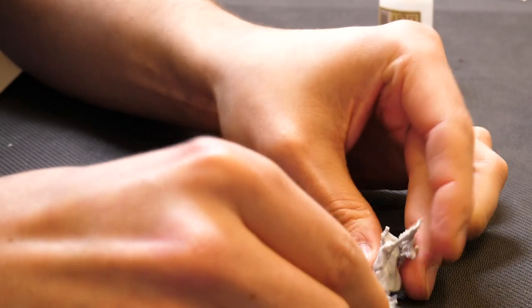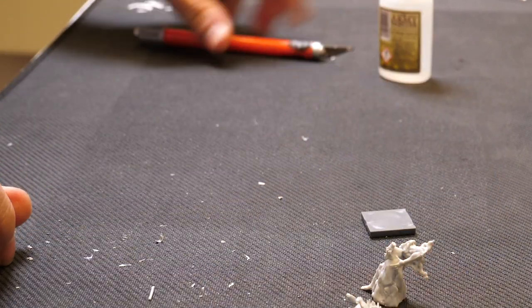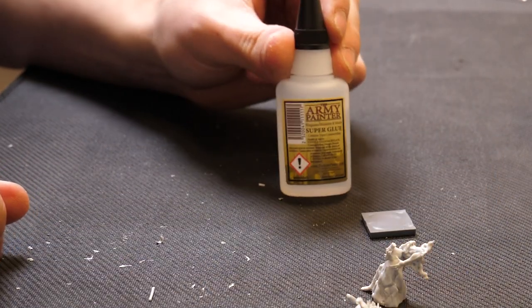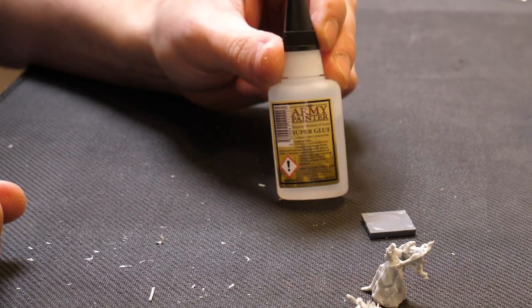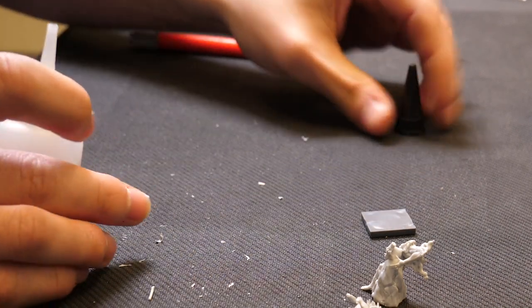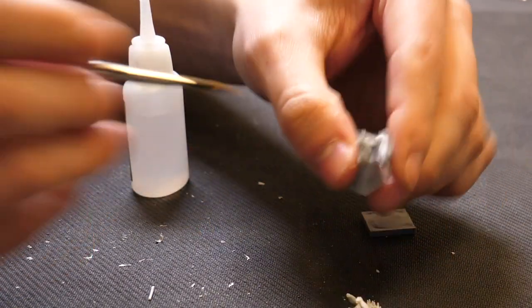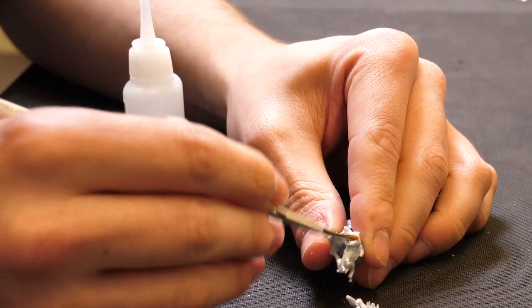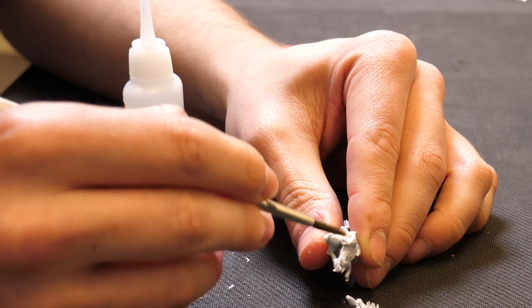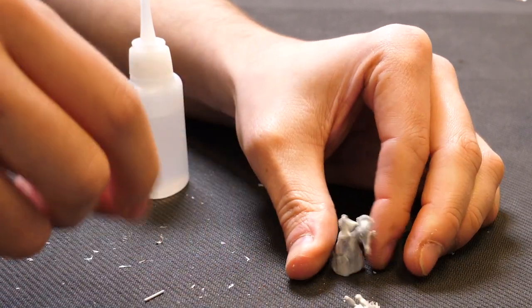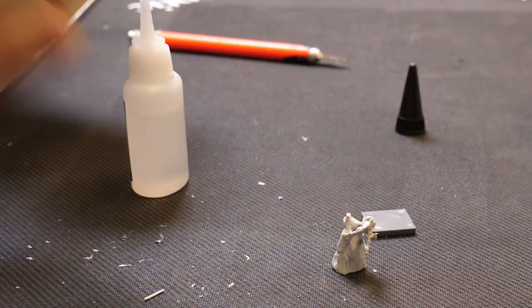There we go with that and the model is ready for gluing. Now with resin we do need to use our super glue for this one. The plastic glue will not work. We can do a little water trick from the previous video. So if we wet one side of it and we glue the other side.